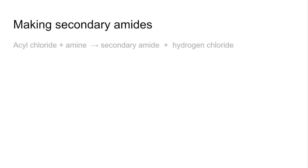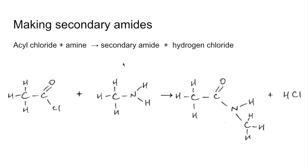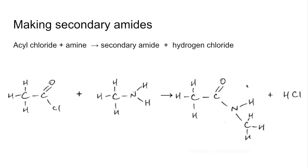And finally, secondary amides. This time we're going to take an acyl chloride and react it with an amine, not ammonia. That gives us a secondary amide and hydrogen chloride. Again, displayed formula really helps — we lasso out the HCl and stick what's left where the Cl was. It's a secondary amide because the nitrogen is now bonded directly to two carbons. We've got a methyl group on the nitrogen of ethanamide, so it's called N-methylethanamide.